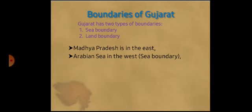Next, Arabian Sea is in the west. Arabian Sea is sea boundary — it is not a land boundary. Please note down in your textbook: Arabian Sea is sea boundary.